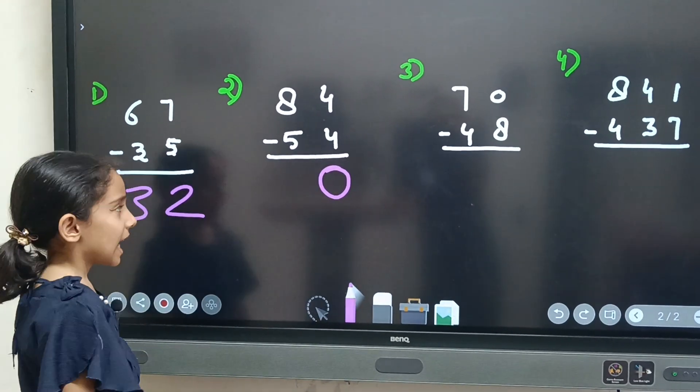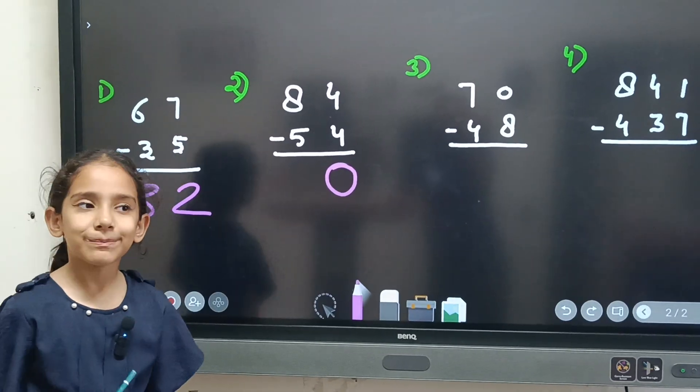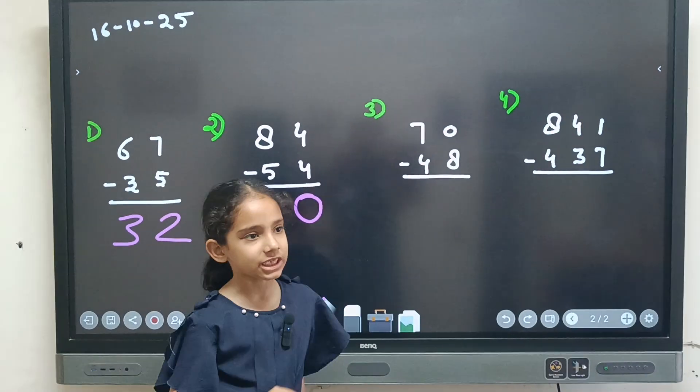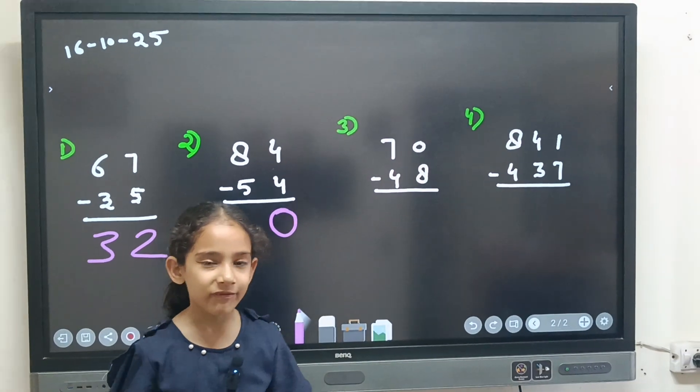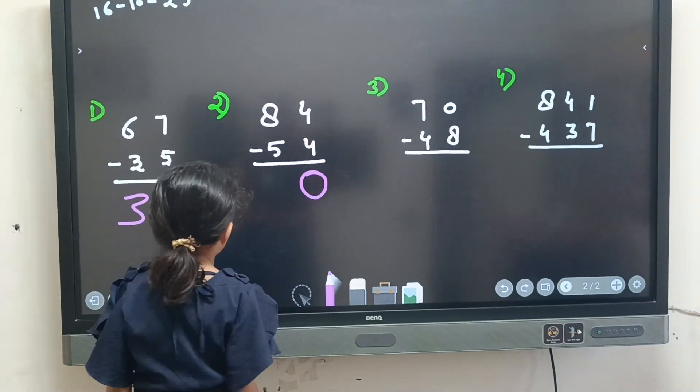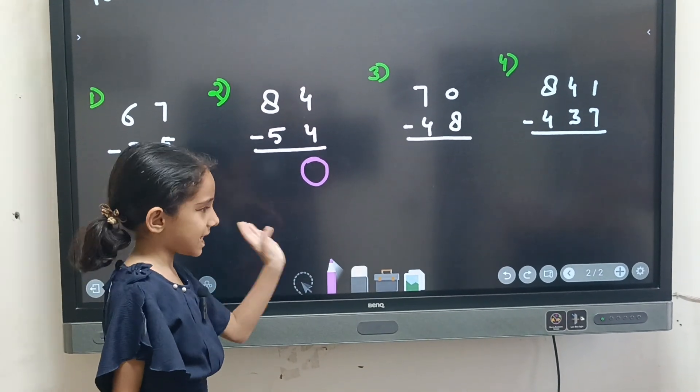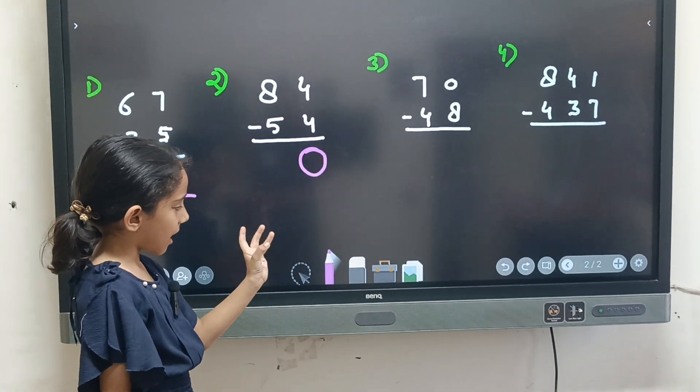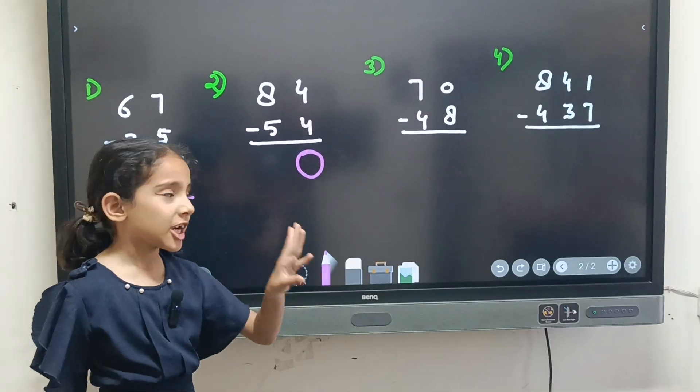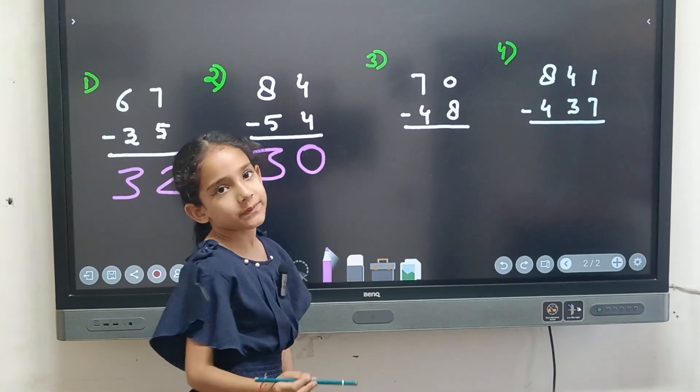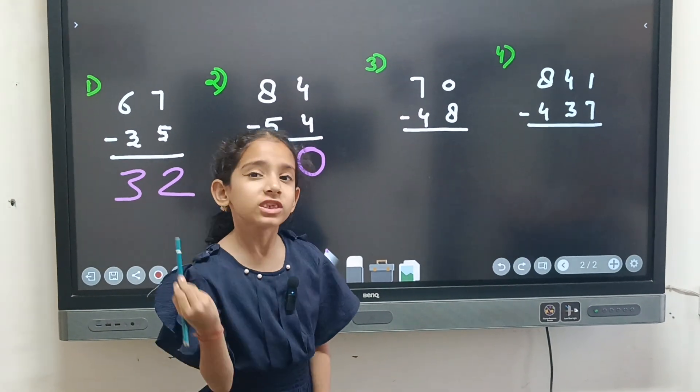And like this also 4 minus 4 gives our answer 0. Next question, 8 minus 5. 8 minus 5 is the correct question. Because 8 is in the top and 5 is in the small. So 8 is bigger than 5. So now count after 5 till 8. 6, 7, 8. How many fingers raise? 3. So answer is 30. This is the way how you solve.